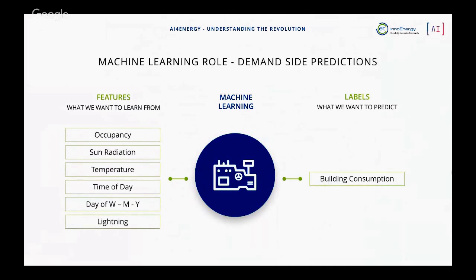On the demand side, we can do the same thing to improve forecasting accuracy. Features like occupancy, solar radiation, temperature, time of day, day of the week, and indoor lighting can be used to model a building's energy consumption. With the machine learning algorithm we can predict how much each building is going to consume. This can be extended nationwide to predict how much a city, region, or whole country will consume the next day. The concept is the same: machine learning can help us model this kind of phenomenon.